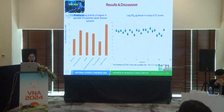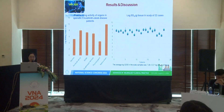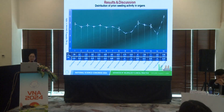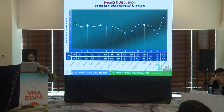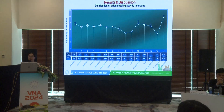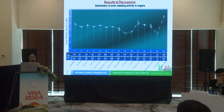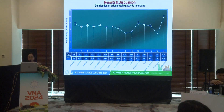This shows prion seeding activity across organ groups compared with the patient's brain. The brain had the highest level at log ID50 of 9.96 ± 0.15. The femoral nerve was approximately 100-fold lower than brain, followed by the esophagus, duodenum, terminal ileum, and scalp. Although some organs are less innervated, all showed seeding activity roughly 1,000-fold lower than the brain. The thyroid showed the lowest, at approximately 4.5 log ID50.